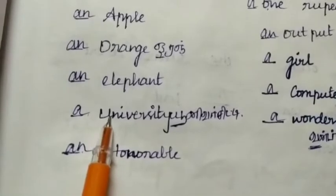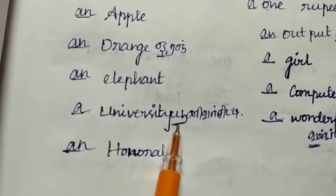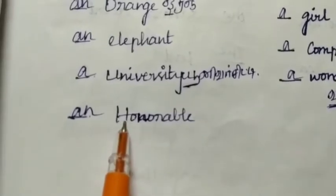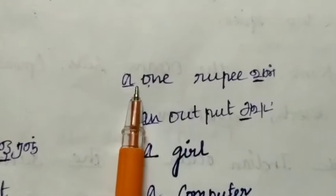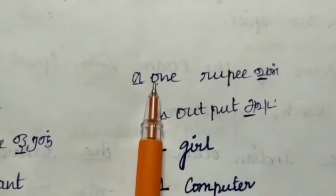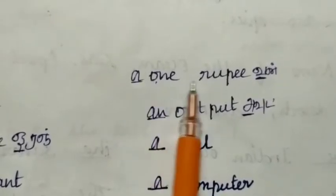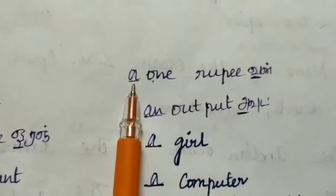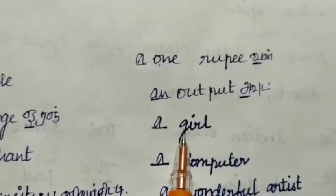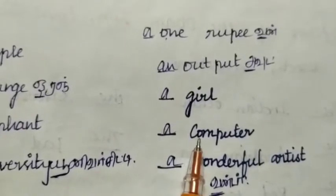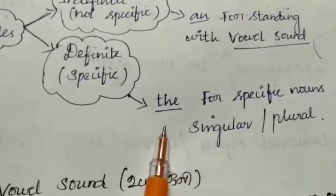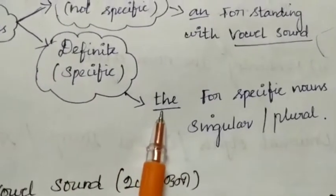Next: 'university' — this also starts with the vowel letter 'u', but we pronounce it 'yoo-niversity', a consonant sound, so we use 'a university'. Next: 'honorable' — the 'h' is silent, so we use 'an honorable'. 'One rupee' — we pronounce it 'won', a consonant sound, so 'a one rupee'. Also: 'a girl', 'a computer', 'a wonderful artist'.